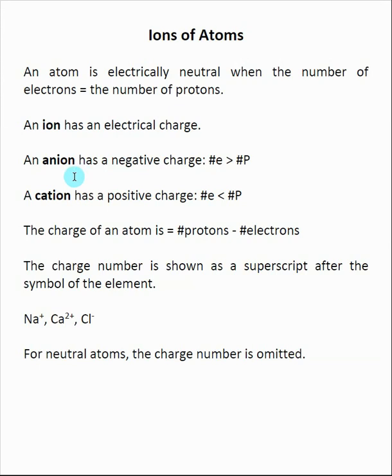Likewise, if the number of protons is greater than the number of electrons, the atom will now have a positive charge and we call that positive charge a cation. Overall, if we want to calculate the charge on a particular atom, we take the number of protons and then subtract off the number of electrons.